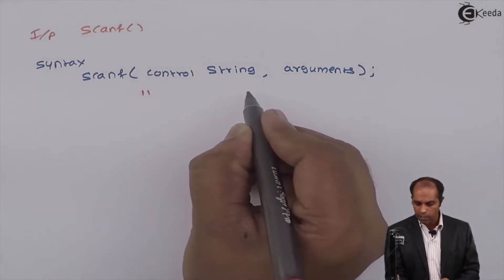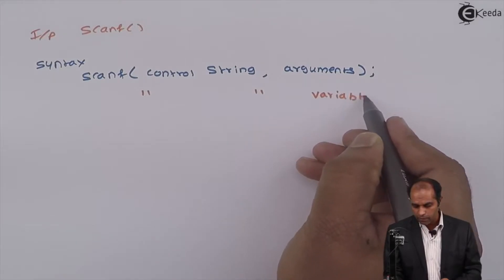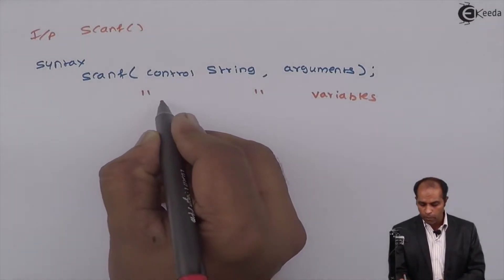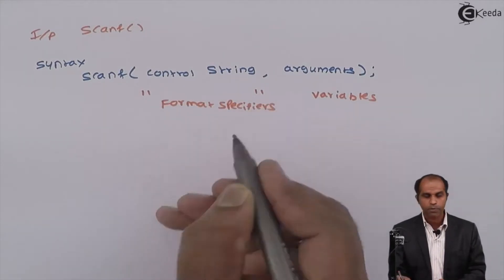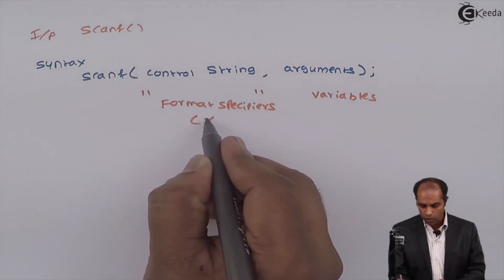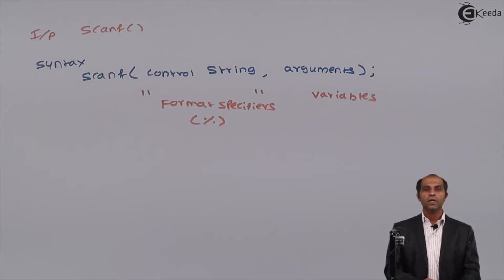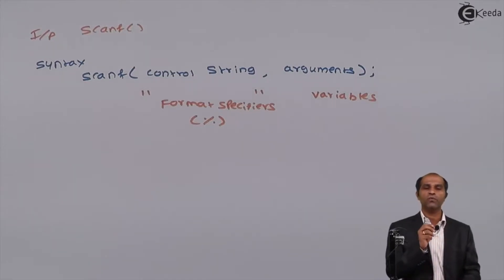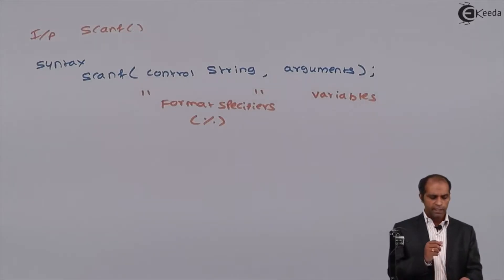As the name says, the control string has to be in double quotes, and arguments are nothing but variables. The control string is purely made up of something called format specifiers. These format specifiers always start with the percentage symbol. You can have %d for integer, %f for float, and %c for character — different specifiers for different types of values. Let's write an example to support this.